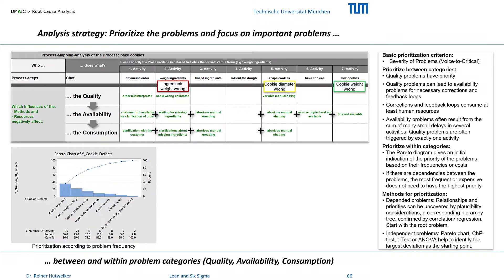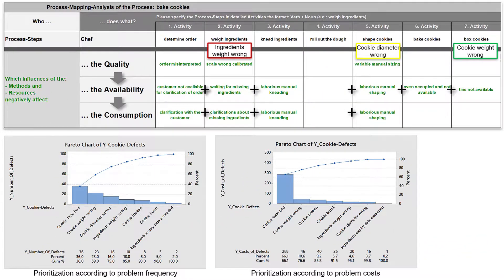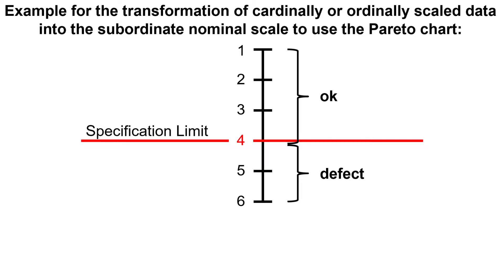Relationships between problems can be confirmed with a correlation or regression analysis. The Pareto chart is suitable to prioritize the problems based on their frequency or based on the resulting quality costs. I collected data for the quality problems: cookie taste bad, cookie weight wrong, cookie diameter wrong, ingredients weight wrong, cookies broken, cookies burned, and ingredients expiry date exceeded. The Pareto chart is suitable for nominal scale data, for example OK vs. DEFECT. To transform ordinarily scaled rating data to the nominal scale level, I assigned ratings above our specification limit of 4 to the category OK, and bad ratings of 5 and 6 to the category DEFECT. This also works for cardinally scaled data.